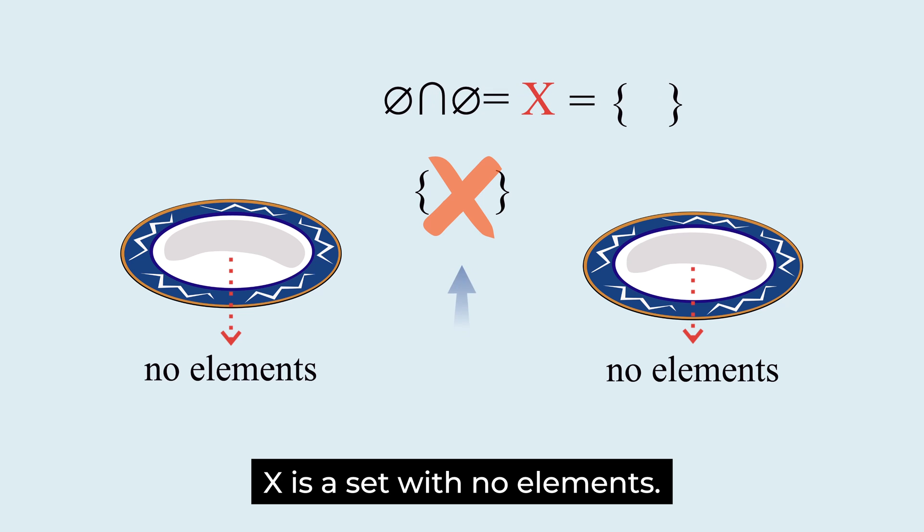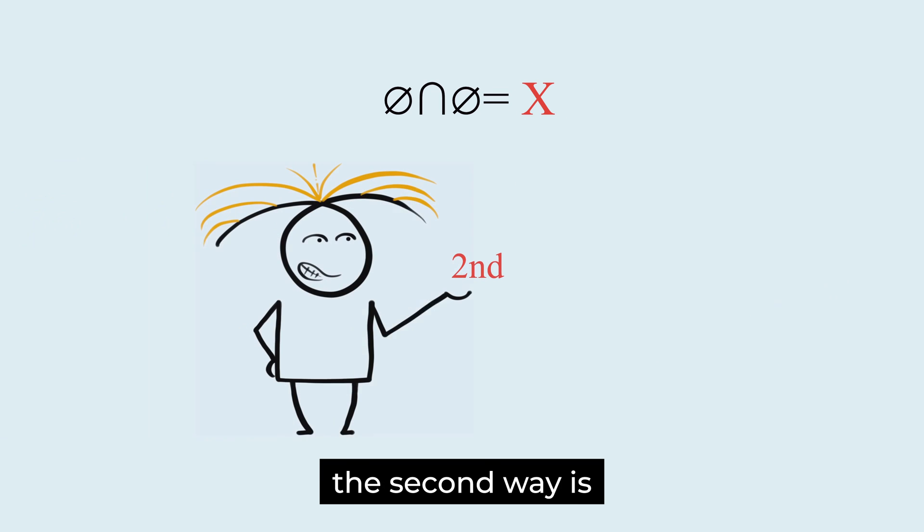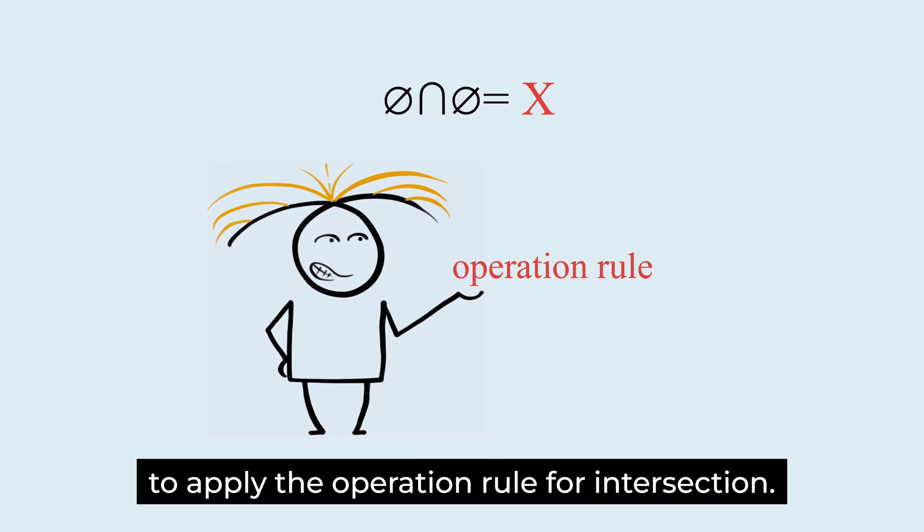X is a set with no elements. We call such a set the empty set. Therefore, X is the empty set.